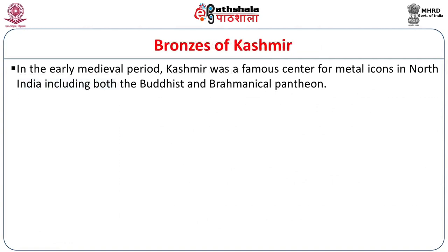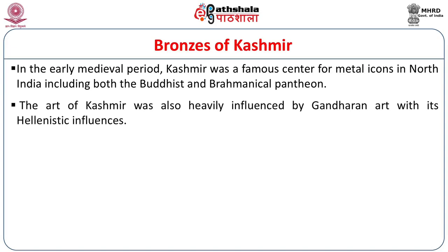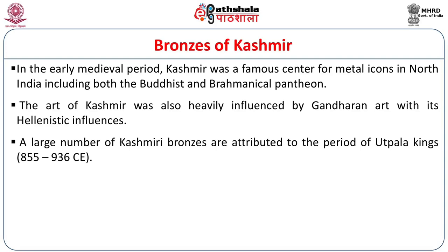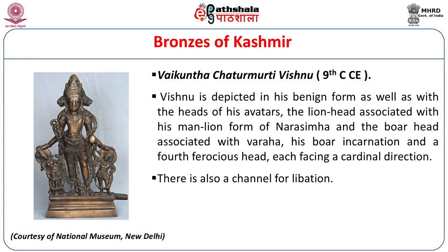We also look at the rich bronze tradition of Kashmir, which was a famous center in North India both for Buddhist and Brahminical bronzes, heavily influenced by Gandharan art. A number of bronzes of Kashmir are attributed to the period of the Utpala kings of 855–936 CE. One famous example is the Vaikuntha Chaturmurti Vishnu of the 9th century, where Vishnu is depicted in his benign form but as a composite along with avatars — the lion head associated with the man-lion form of Narasimha, the boar head associated with Varaha or the boar incarnation, and a fourth ferocious head, each facing a different cardinal direction.